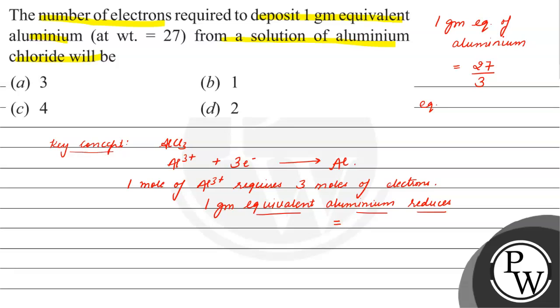Let us see, equivalent weight = molar mass / n-factor. The n-factor is the charge needed to reduce it, that is 3. So equivalent weight = 27/3 = 9 grams.